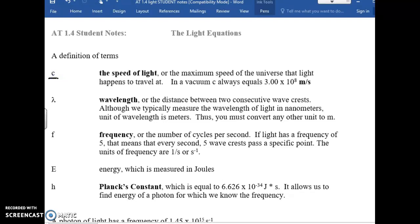The first one is c, the speed of light. In a vacuum, it's been both measured as well as theoretically determined that the speed light must be three times ten to the eighth meters per second in the vacuum.